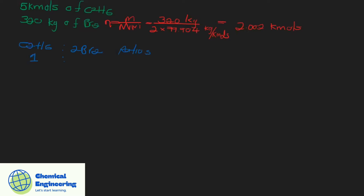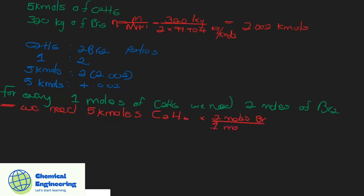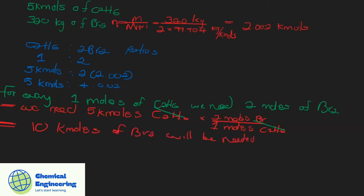The stoichiometric ratio is 1 to 2. We are given 5 kilomoles of ethane, and after converting, we can see that for every one mole of ethane you will need two moles of bromide. Using ratios, the ethane units cancel out, and therefore 10 kilomoles of bromide would be needed.